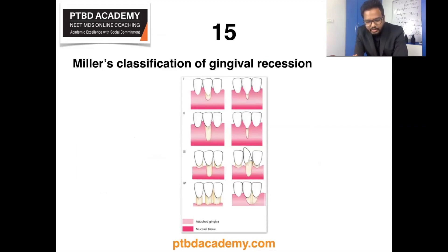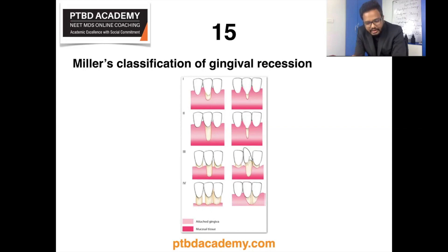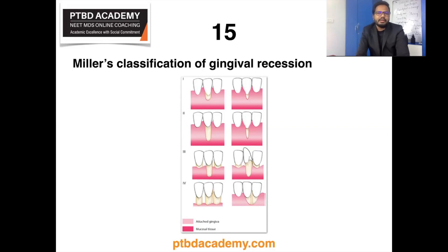There seems to be an image-based question on Miller's classification of gingival recession. Miller proposed a classification system in 1985, and it is probably still the most widely used system for describing gingival recession. This classification is based on the extent of gingival recession defects and the extent of hard and soft tissue loss in the interdental area. Class 1: marginal tissue recession that doesn't extend to the mucogingival junction, no periodontal bone or soft tissue loss, and 100% root coverage can be anticipated. Class 2: marginal tissue recession extending to or beyond the mucogingival junction, no periodontal loss, and 100% root coverage can be anticipated.